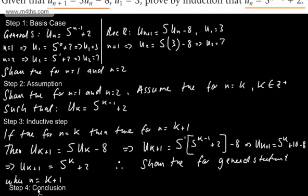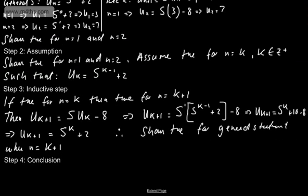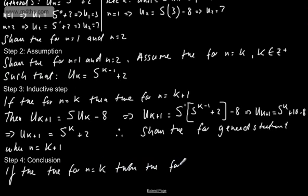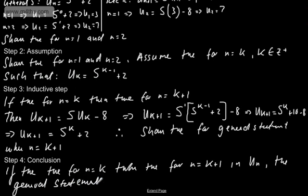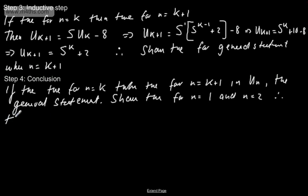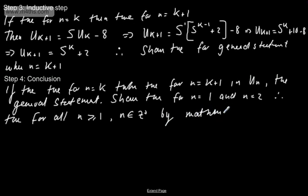We now write our conclusion — step 4. If true for n equals k, then true for n equals k plus 1 in u_n, the general statement. We've shown true for n equals 1 and n equals 2. Therefore, true for all n with n greater than or equal to 1, where n is a positive integer, by mathematical induction.